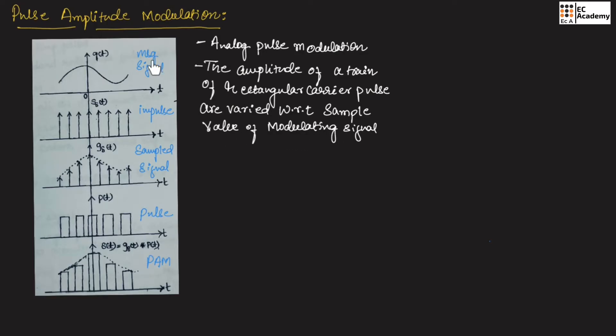Let us understand this from this diagram where we are considering a message signal and the train of impulse signal. So we have obtained the sampled signal by using message signal and impulse signal. We will consider one more carrier signal which is the rectangular train of pulses to which this sampled signal is convoluted to obtain the pulse amplitude modulated signal which is represented as S of T.